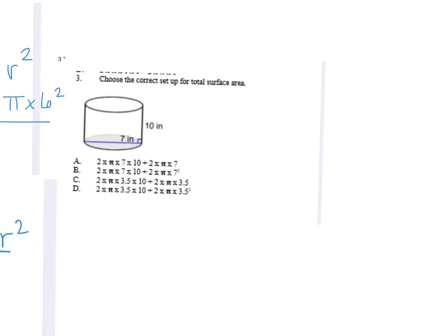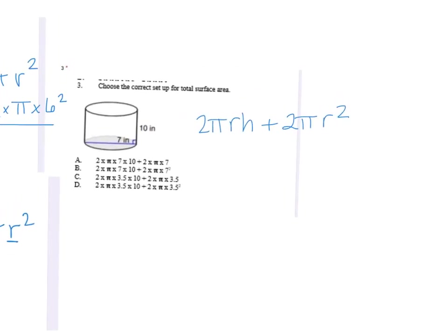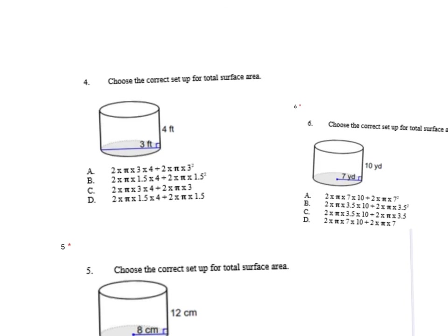Number three — write the formula down: two times pi times radius times height, plus two times pi times radius squared. Looking at your circular base, they drew a line all the way across and said that was seven. You don't want seven — we want halfway across. Use your calculator: seven divided by two is your radius, and then your height is ten.